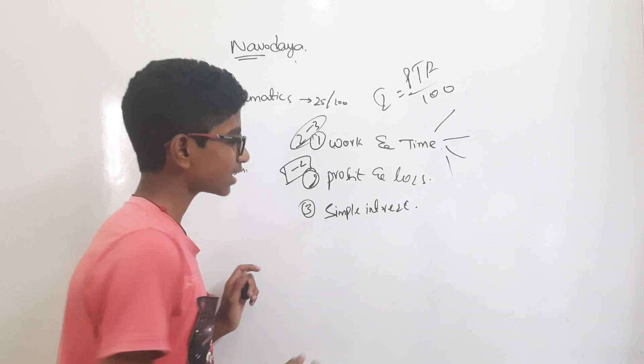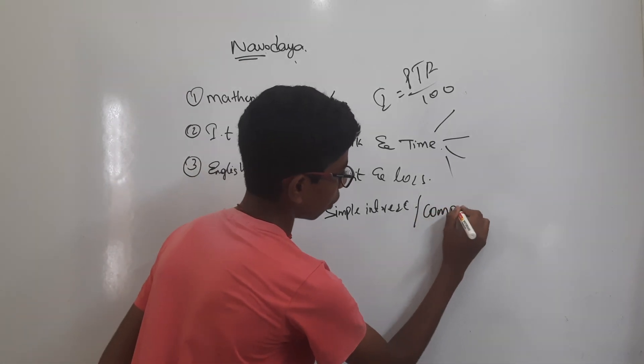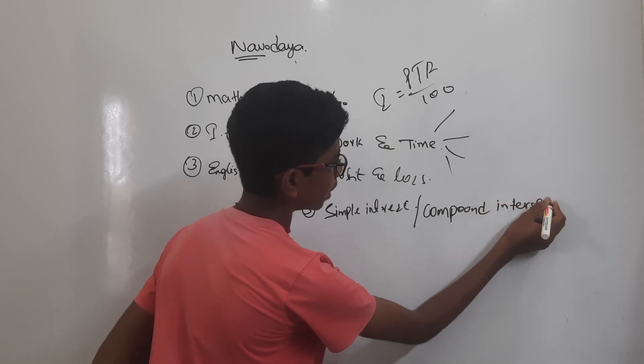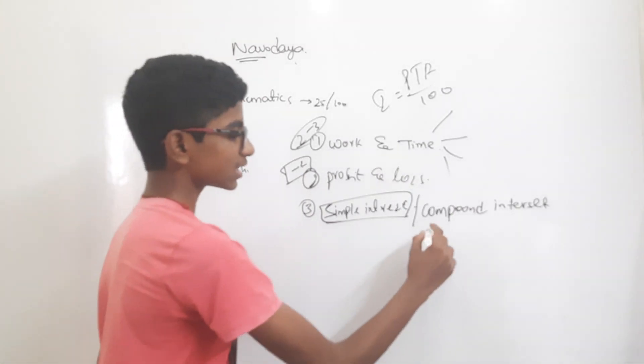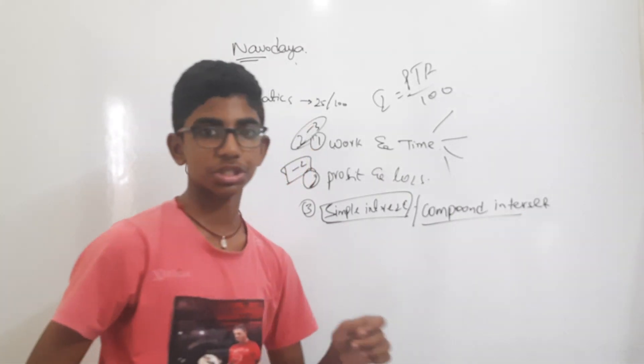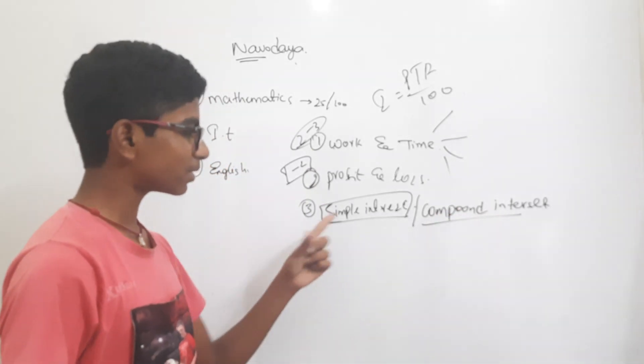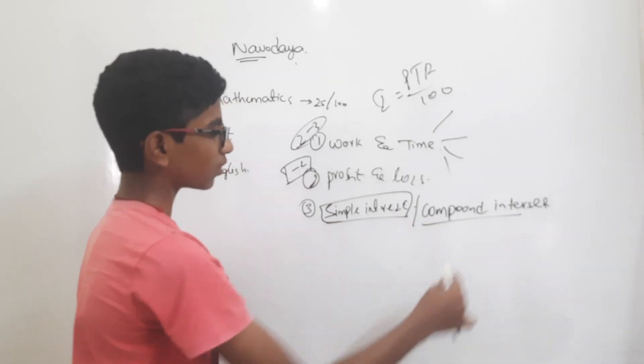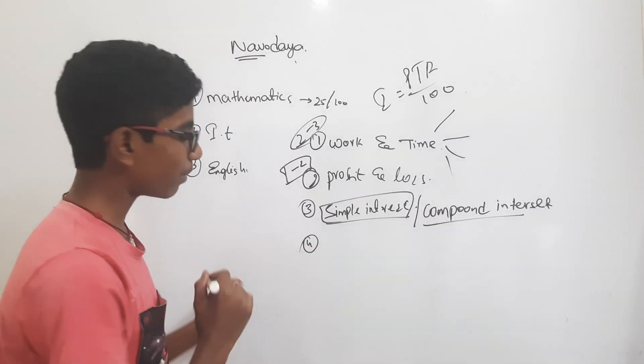Sometimes they will also ask Compound Interest. Mainly they will ask 90 percent Simple Interest only. Sometimes in sixth class analysis exam, Compound Interest will also be asked. This Compound Interest is quite different from Simple Interest, so we have to concentrate more on Simple Interest. After Compound Interest, the next lesson is Number System.